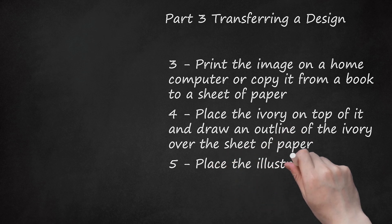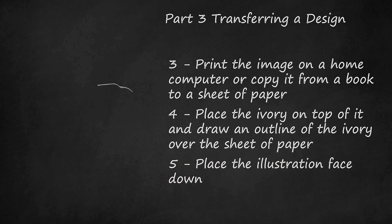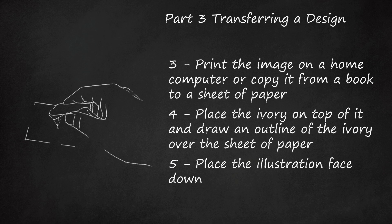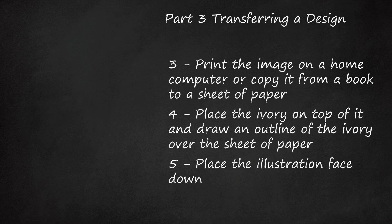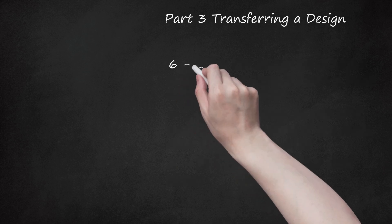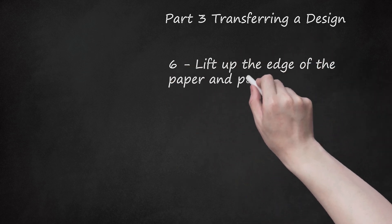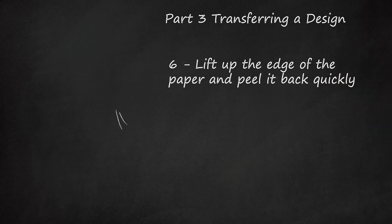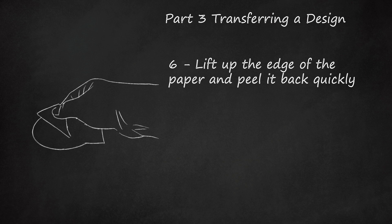Place the illustration face down. Wet a cloth with acetone nail remover. Rub it lightly over the top of the paper with the cloth and then with a bone folder. Make sure the paper is completely wet. Lift up the edge of the paper and peel it back quickly. You don't want to move it around on the surface, or it will smudge your outline. Discard the paper.